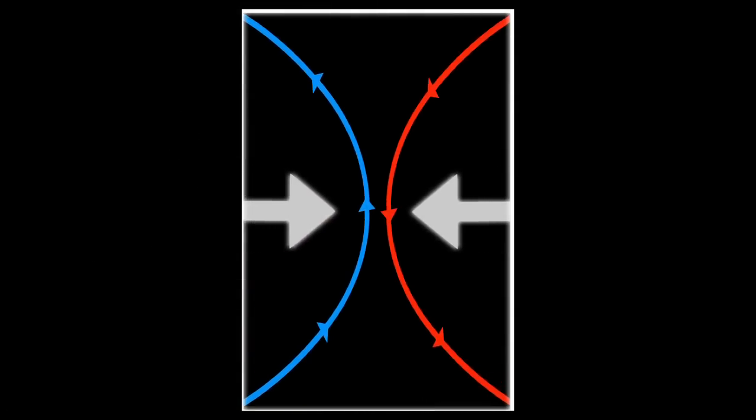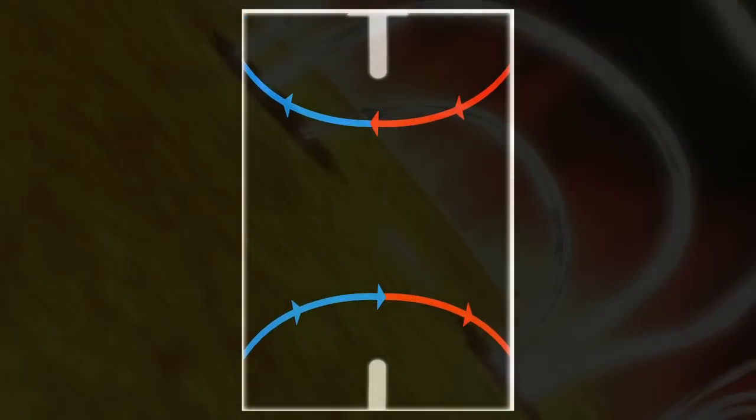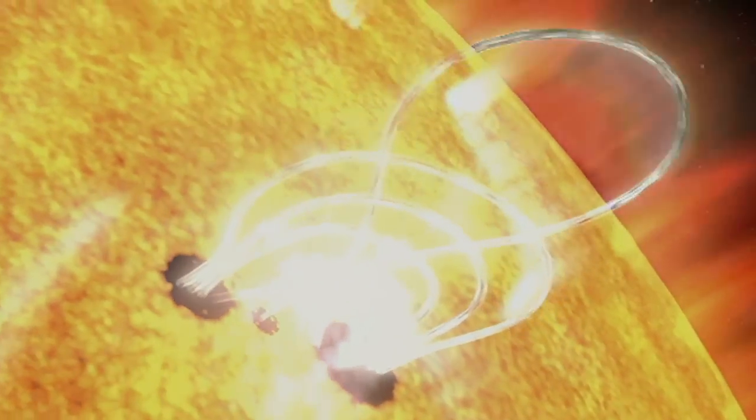Magnetic reconnection is when magnetic fields connect and disconnect, explosively transferring energy. Scientists believe magnetic reconnection drives almost every dynamic event on the Sun, including solar flares.